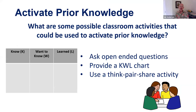Let's look at our first principle: activate prior knowledge. Here are three possible classroom activities to focus on activating prior knowledge before asking students to read. You can ask open-ended questions, which provides the opportunity for students to link their reading skills and speaking skills — a natural opportunity to combine those two language skills. We can get students talking and responding to open-ended questions about the passage they're going to read.